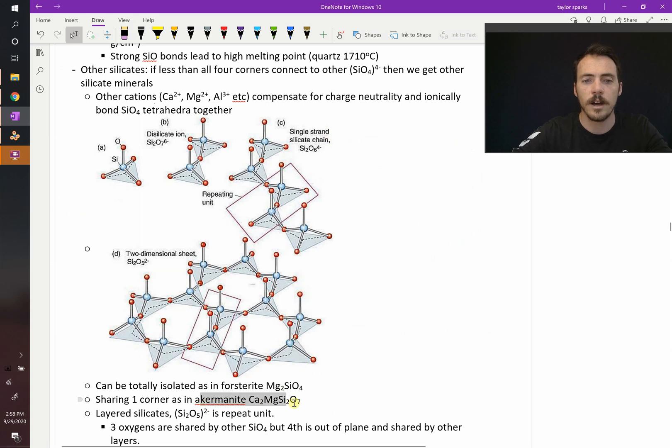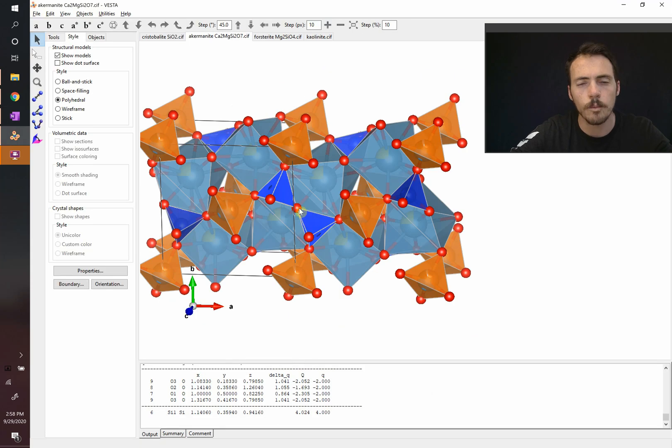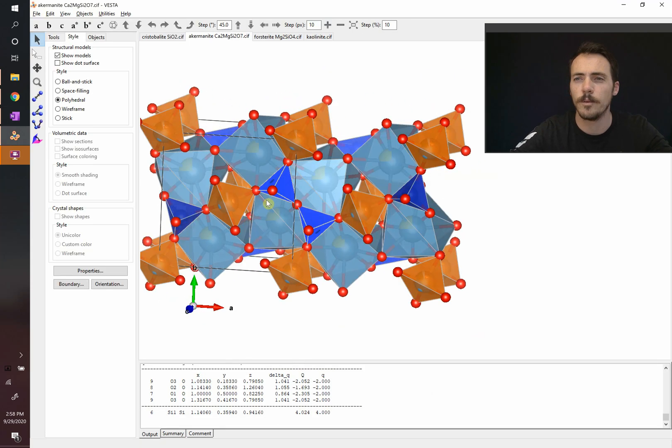For example, take ackermanite. In that one, you've got them sharing one corner, forming a little dimer. So here's our two polyhedra units that are sharing one corner, but are otherwise unconnected with other SiO4 units.